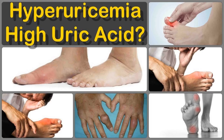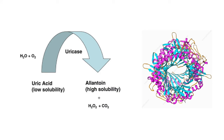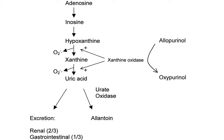In other higher primates, uric acid in the form of hydrogen urate ion is the final oxidation or breakdown product of purine metabolism and is excreted via the urine. In most mammals, the enzyme uricase further oxidizes uric acid to allantoin.